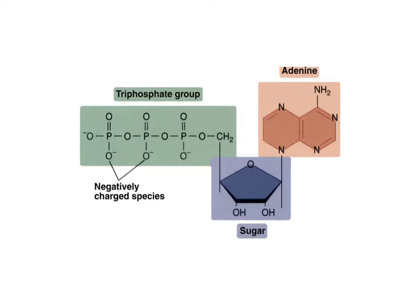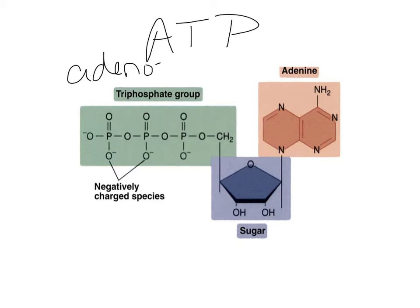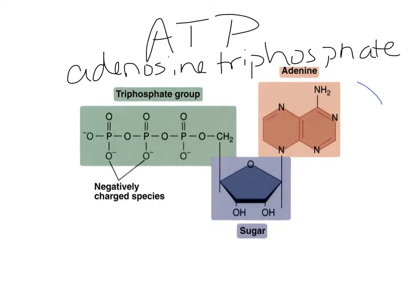Let's start with this molecule here — ATP, adenosine triphosphate. ATP is made up of an adenine molecule, a sugar — in particular ribose — as well as three phosphate groups attached to it.